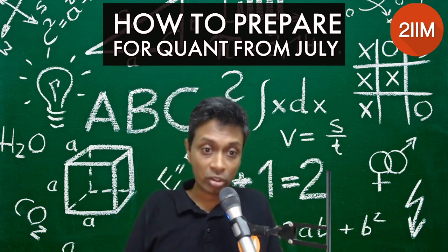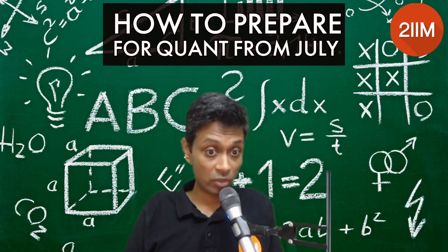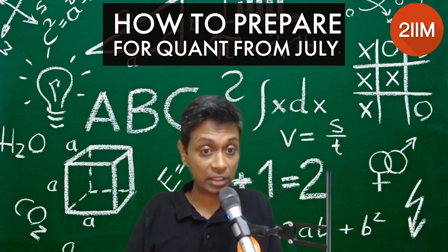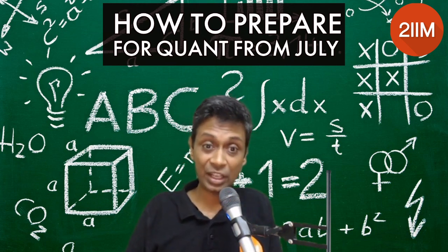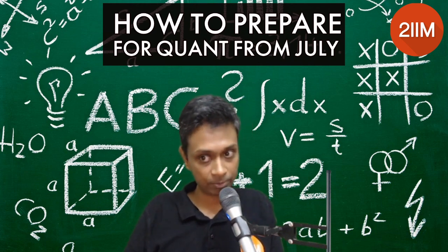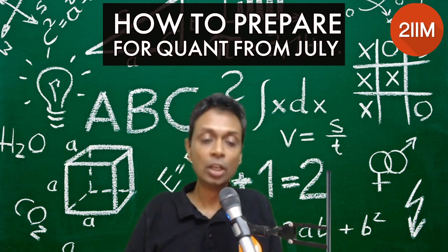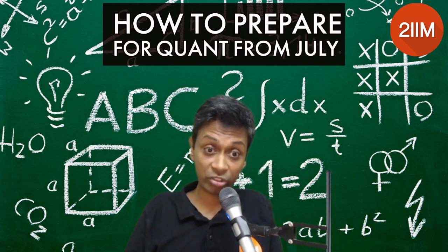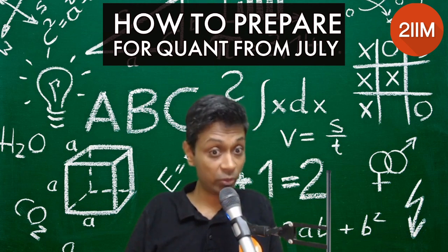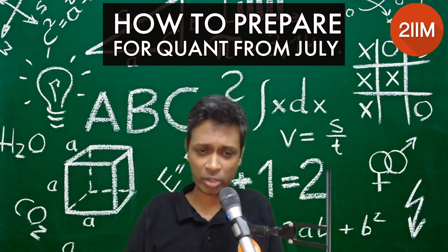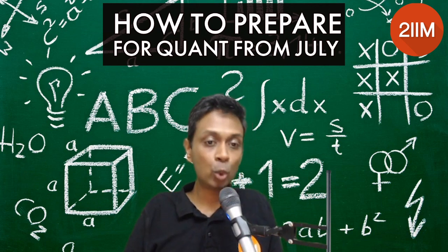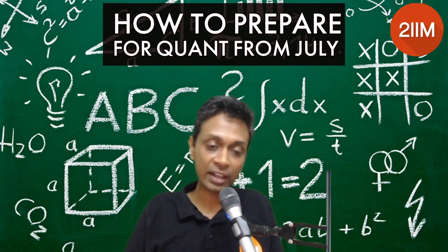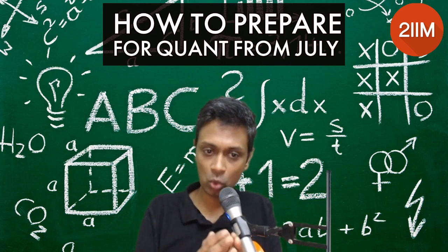The cross-linking across topics is very high. You learn three or four topics and you get better at the other three or four topics automatically — give it a chance for that to happen. Don't get worked up because you're not seeing the benefits straight away. Quant is the elephant in the room; go step by step, but don't worry about speed.